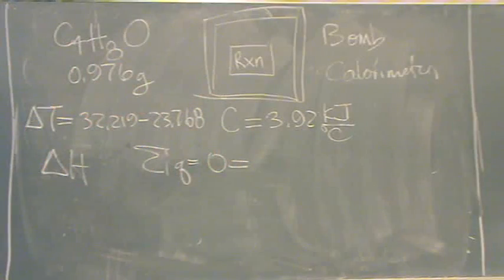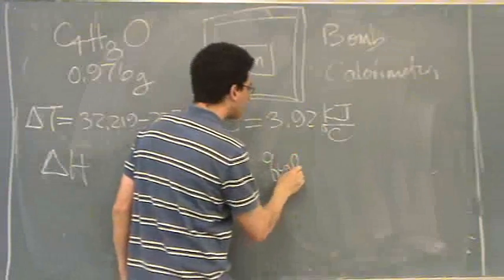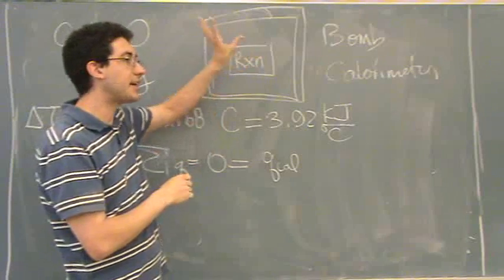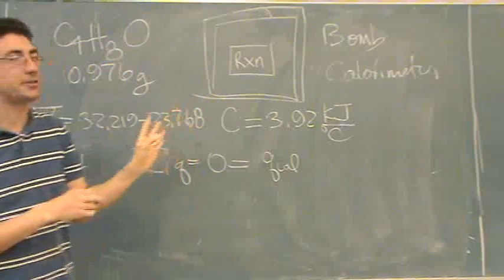You've got to figure out what q's are here. I'll give you a hint, there's two. So what are the two q's? Calorimeter and the reactor. Yeah, there's a q of the calorimeter because it warms up. Okay, the calorimeter, everything inside of it warms up. So there's a temperature change. That's the only thing that changes temperature.